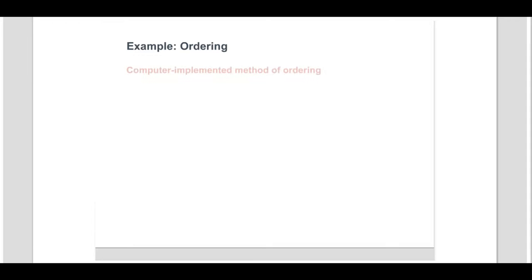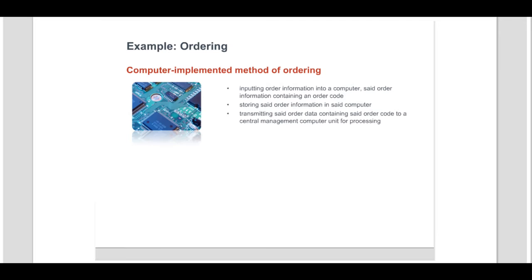In this example, a method of ordering is implemented on a computer where the method comprises the following steps. Firstly, inputting order information into a computer, the order information containing an order code. Secondly, storing the order information in the computer. And finally, transmitting the order data containing the order code to a central management computer unit for processing.